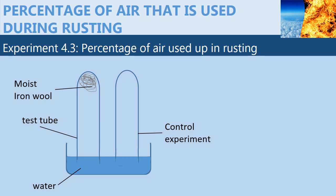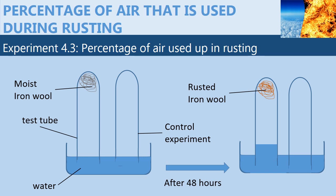In the beginning of the experiment, the water level in the two test tubes is the same. When the iron filings are left for 48 hours, you will find that they turn brown, showing that they have rusted, and the level of water in the test tube rises.